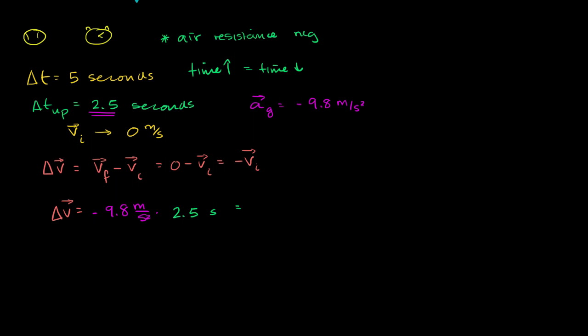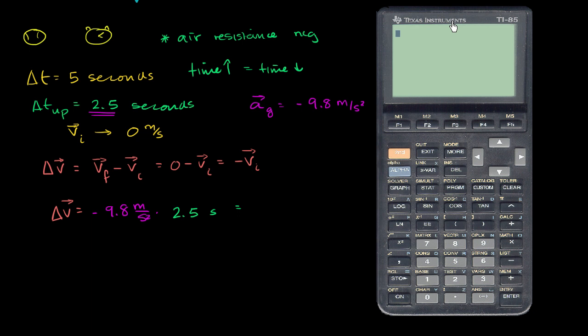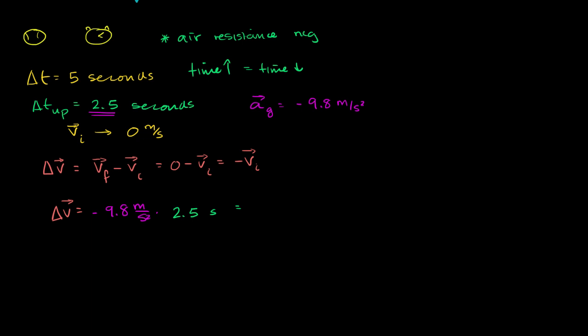So what is our change in velocity, which is also the same thing as the negative of our initial velocity? I'll get the calculator out. So it is negative 9.8 meters per second times 2.5 seconds. It gives us negative 24.5 meters per second. This second cancels out with one of the seconds in the denominator, so we only have one in the denominator now, so it's meters per second. And this is the same thing as the negative initial velocity. You multiply both sides by a negative, we get our initial velocity.